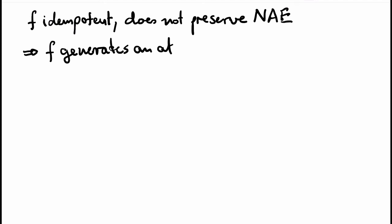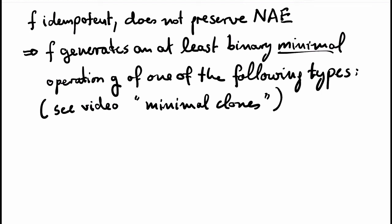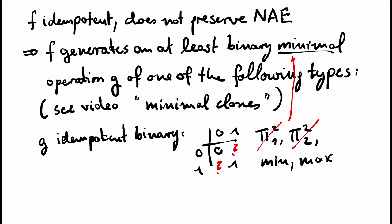By what we have learned in the video about minimal clones, the function F generates an at least binary minimal operation G, which is of one of the following types. The first is that G is idempotent and binary. Well, there are not so many binary operations that are idempotent over a two-element set. There are the projections. However, the projections are not minimal. So in fact, this is not an option. The only two other possibilities are the operation min and the operation max. And these operations generate the minimum or maximum operation of arity K for all K. So we have totally symmetric polymorphisms of all arities and are again done.